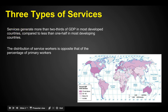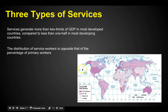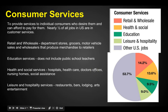The distribution of service workers is opposite that of the percentage of primary workers. Where you're finding these services is in the developed countries — look at Western Europe, North America, Australia — where you have highly developed countries.